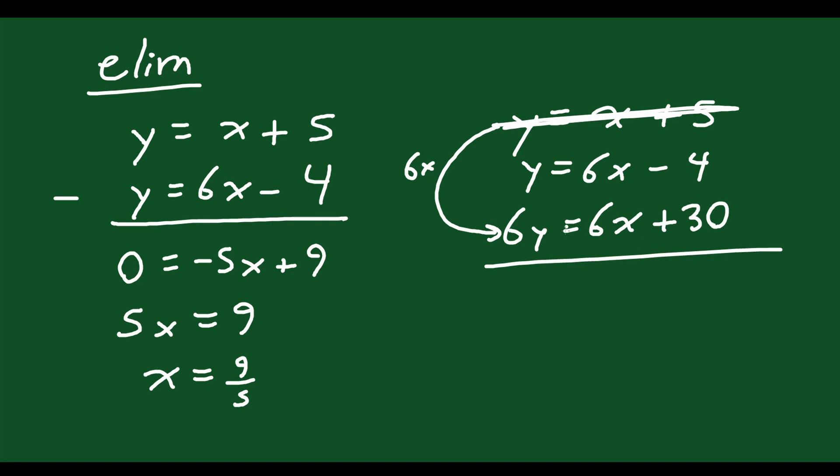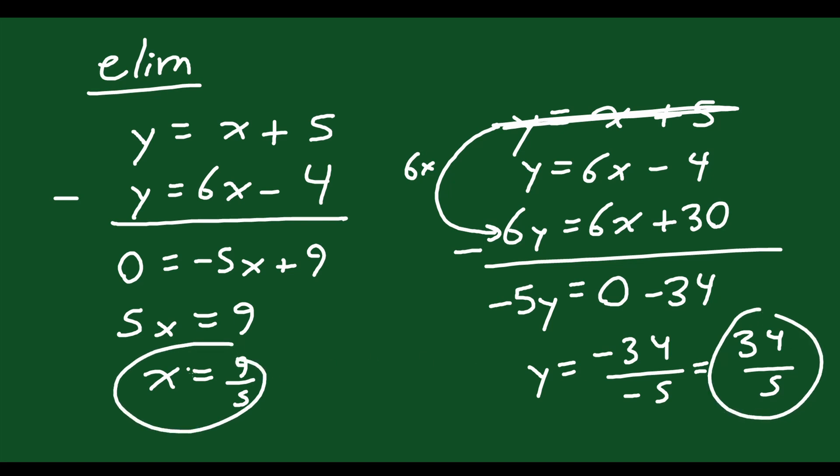So that one's changed to this, so I have this equation and this equation, I'm going to subtract those. So y minus 6y is negative 5y, that's equal to 6x minus 6x is 0, so I've eliminated the x's, negative 4 minus 30 is minus 34. Now I can solve for y. So now divide both sides by negative 5, y equals negative 34 over negative 5, which those negatives are going to cancel, you get 34 over 5.